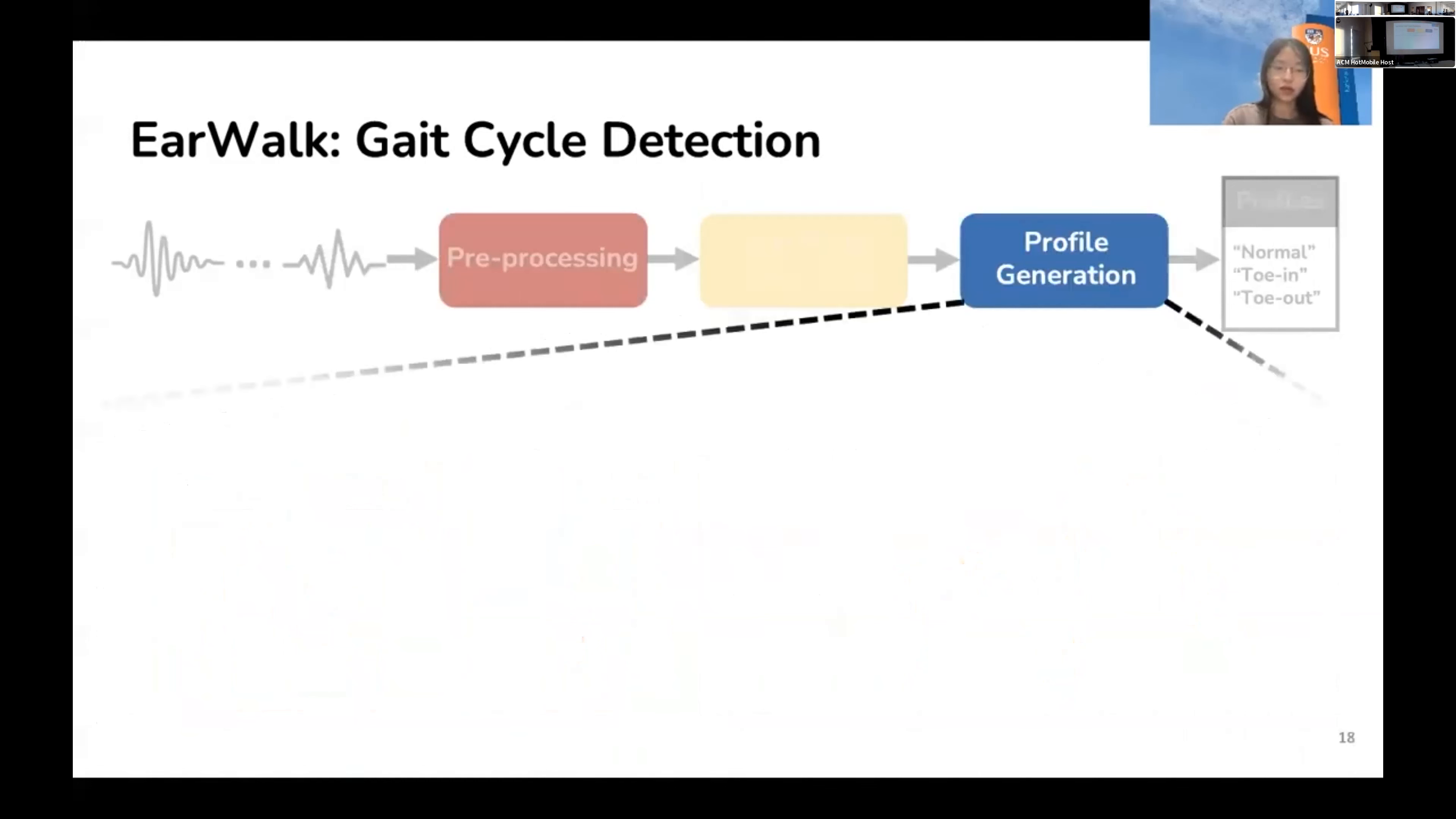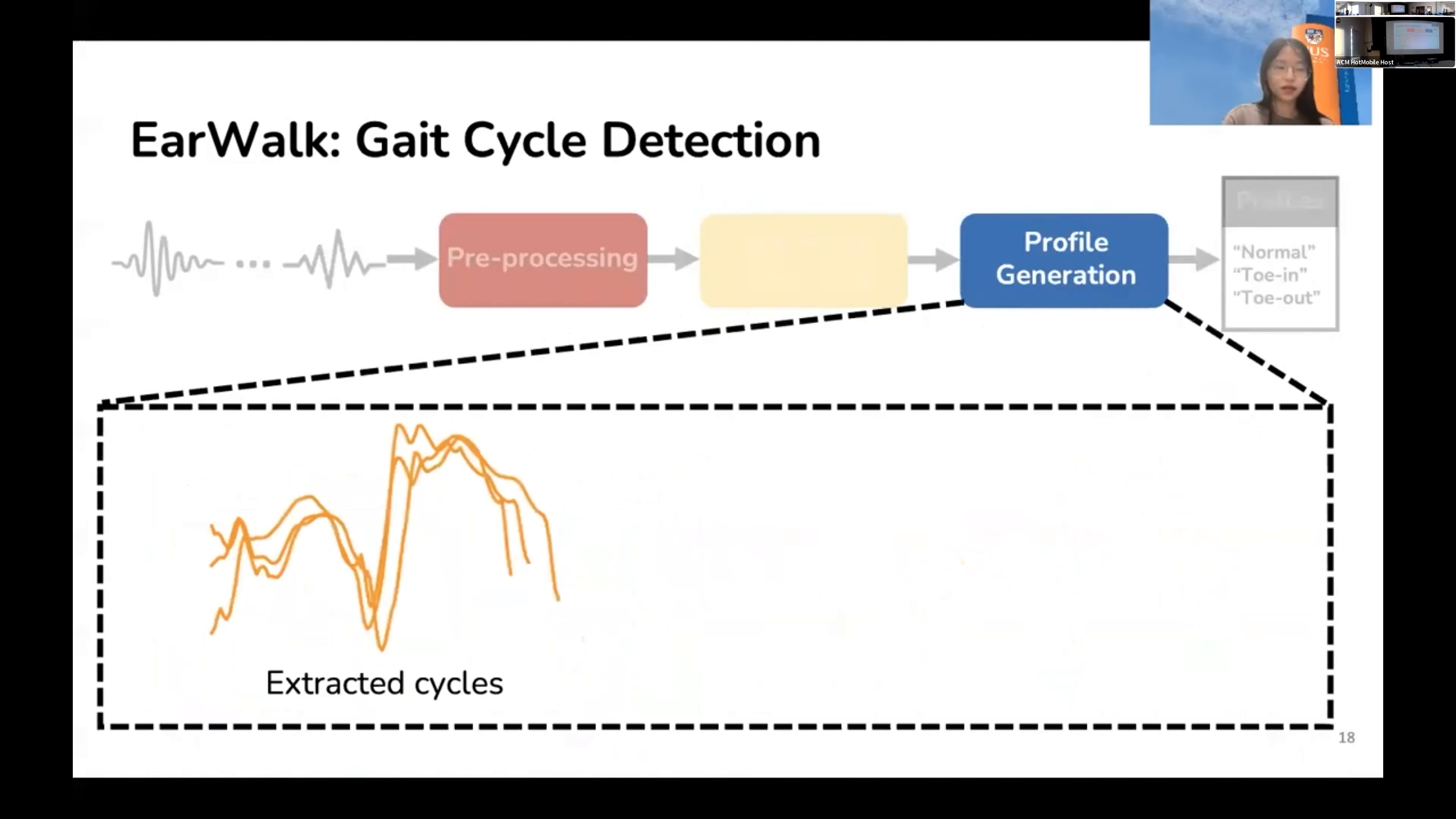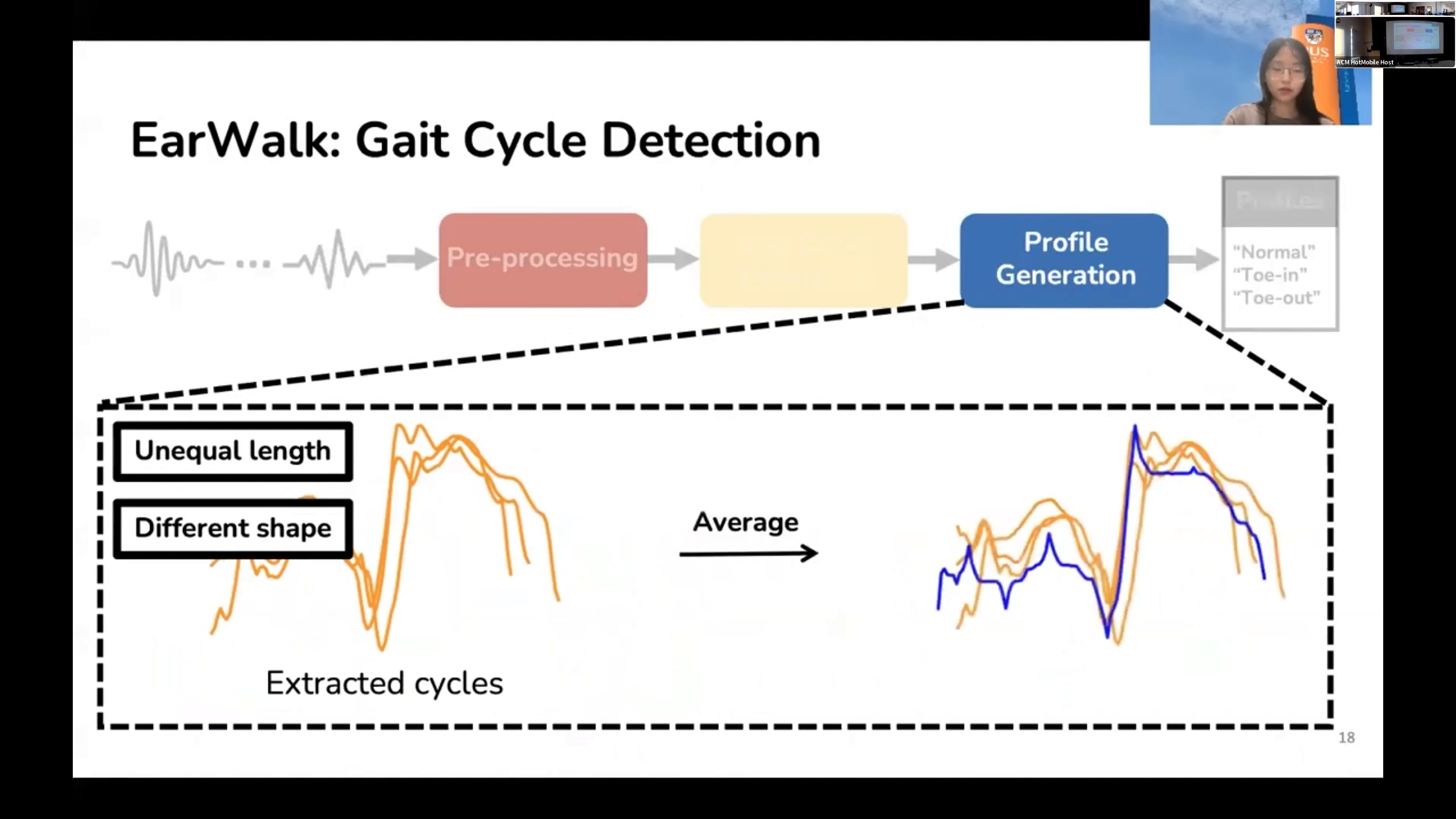After obtaining gait cycles, here comes a problem: gait cycles generally have large variations in both the signal length and shape. We want to extract common patterns from them in this profile generation module to remove the variations. Intuitively, we can compute the average of the signal cycles and then keep the average cycle as a profile. But in our case, the cycles are of unequal length, which means that we cannot apply arithmetic average directly. To solve the problem, we use a dynamic time-warping barycenter averaging algorithm to compute the average of gait cycles varying in duration.